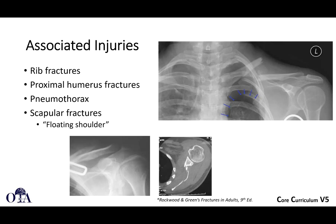Associated injuries include rib fractures, proximal humerus fractures, and other fractures in the same vicinity, since these typically result from a direct blow to the lateral shoulder. Chest injuries can include pneumothorax. If you have both a glenoid fracture and a clavicle fracture, you can have a so-called floating shoulder — as seen here with a clavicle fracture and a scapular neck and body fracture.